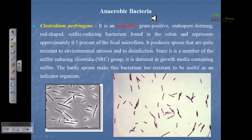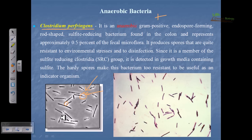We can also utilize anaerobic bacteria such as Clostridium perfringens or Bifidobacteria. Clostridium perfringens is an anaerobic, gram-positive, endospore-forming bacterium. In microscopy with an appropriate stain, you can see the endospores as bubble-like structures at the end of the cell. This bacterium is found in the colon and represents approximately 0.5% of the fecal microflora. It produces spores quite resistant to environmental stresses and disinfection, and it belongs to the sulfate-reducing bacterial group — it can reduce sulfate by oxidizing hydrogen sulfide.